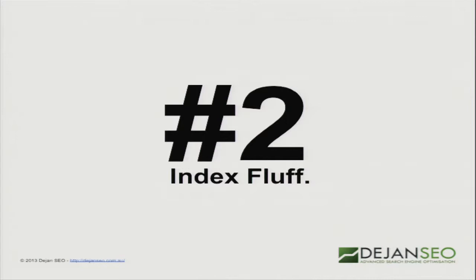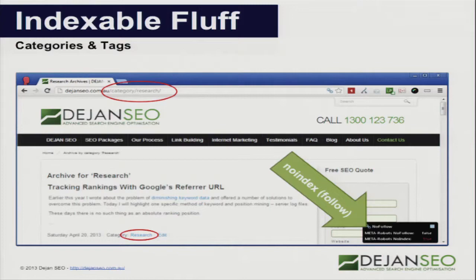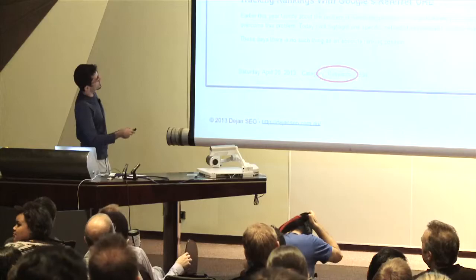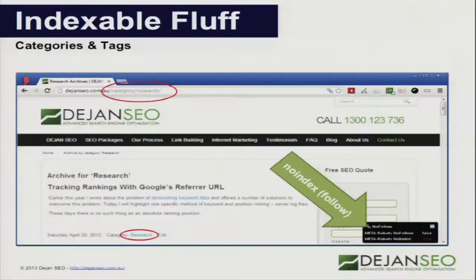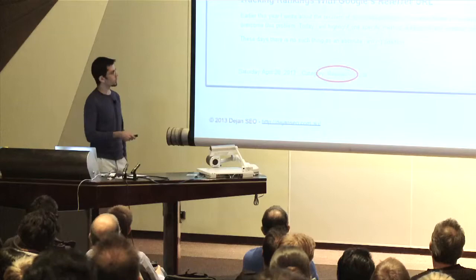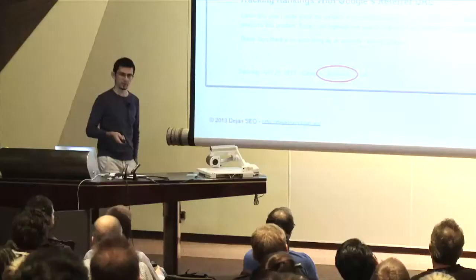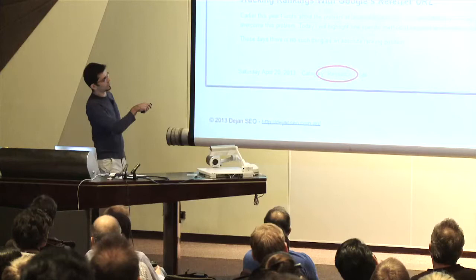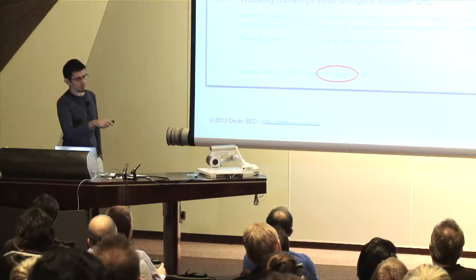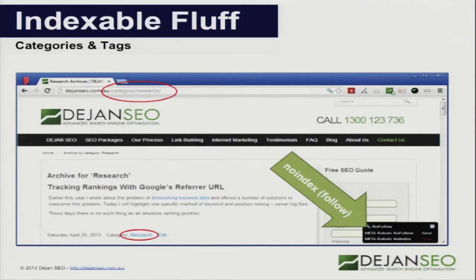By fluff I mean anything that's indexable and it shouldn't be indexable. If you're running a WordPress site, all your category pages and tag pages will be indexed. Google doesn't want those pages in their index — they want the actual content page. When users find something, they're not forced to search through stuff to find what they're really after. Solution: just no-index. Pro tip: people will sometimes link to these pages, so you don't want to no-index without also implementing no-follow, or you'll lose page rank flowing from external sources.